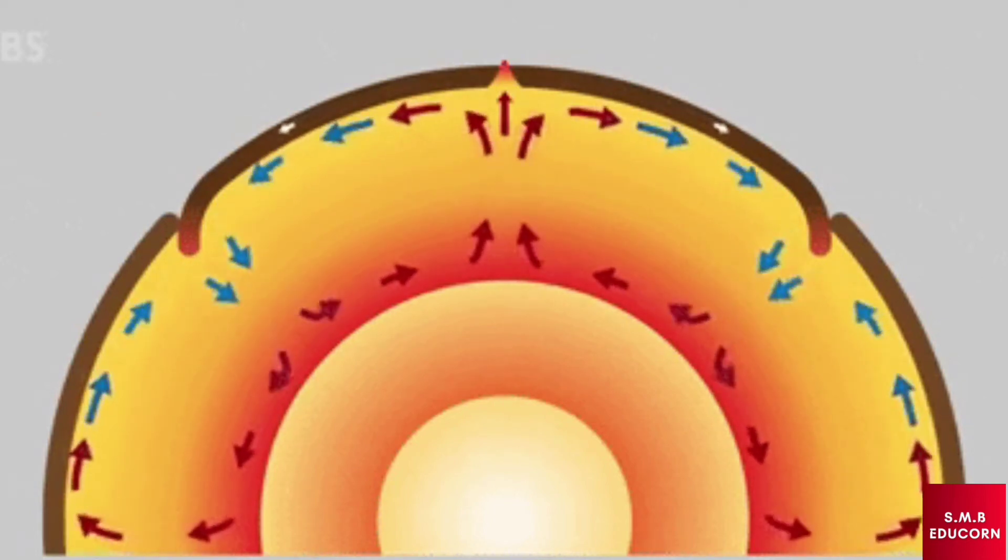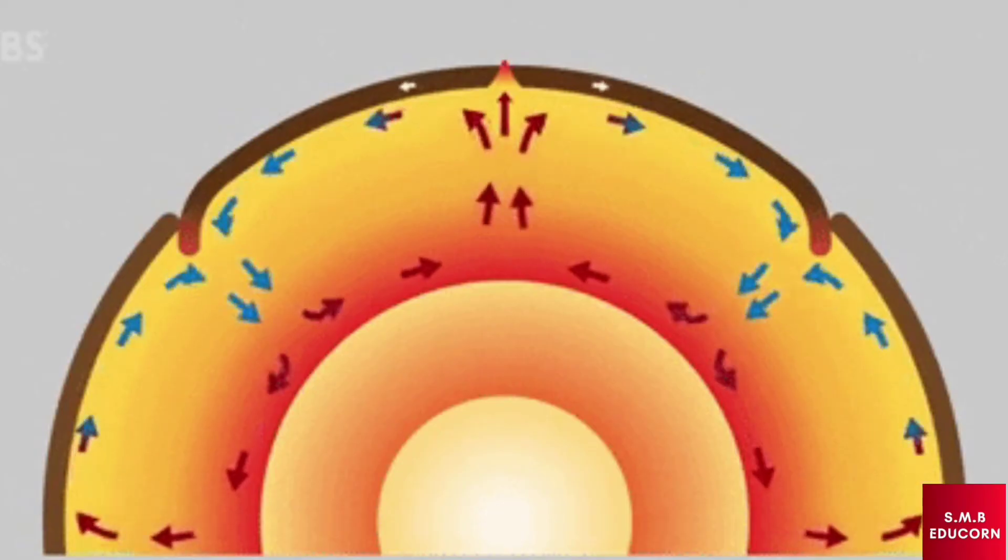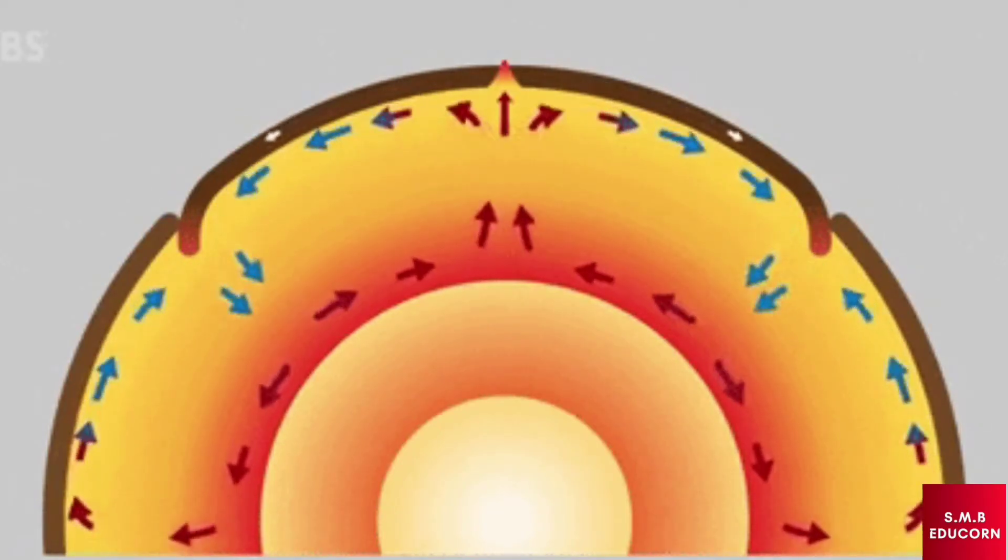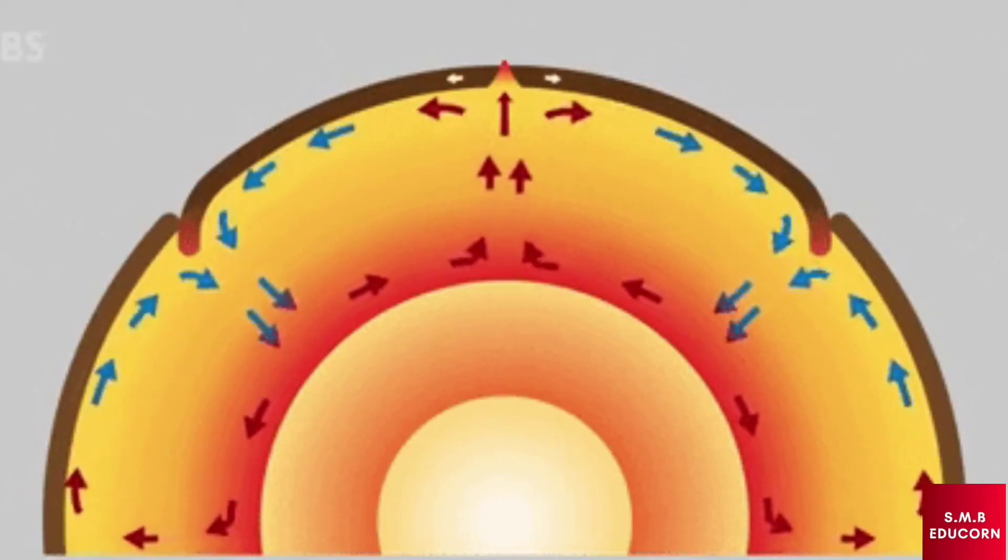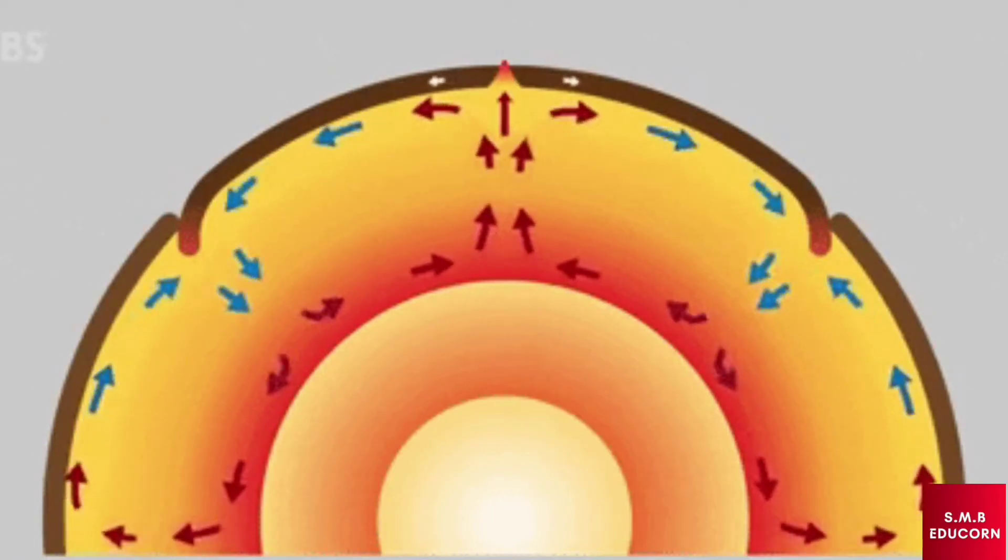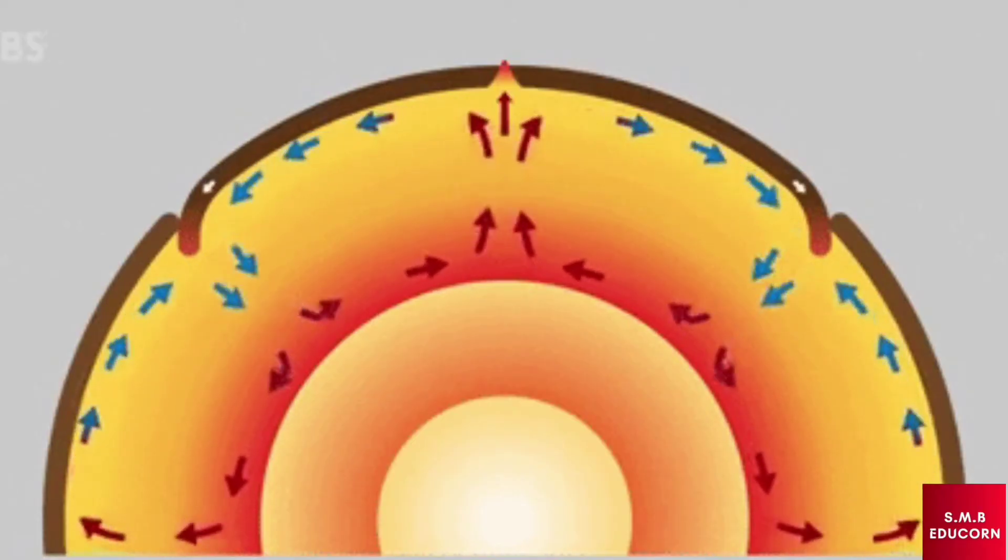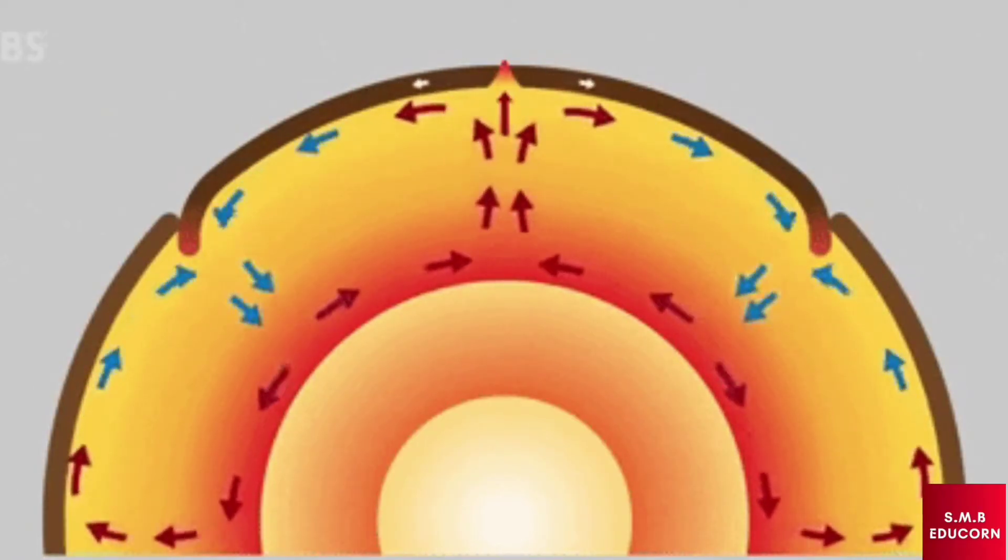In this zone, the hot plasma, ionized gas, hydrogen and helium from the bottom of the zone bubbles up to the surface of the sun. Here it loses its heat to the space around it. As the plasma cools down, it starts shrinking again. The entire process is called convection.